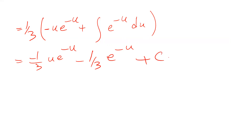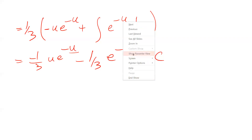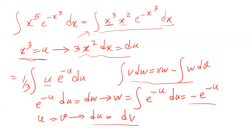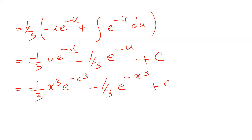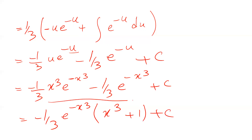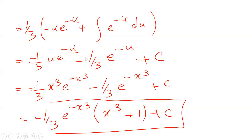Adding the constant of integration c, all we need to do now is substitute u back with x³. So the final answer is minus one-third times x³ times e with the power of minus x³, minus one-third times e with the power of minus x³, plus c. Or equivalently, minus one-third times e with the power of minus x³ times (x³ plus 1) plus c. And this is the solution to our integral. I hope you found this video helpful. Thank you.